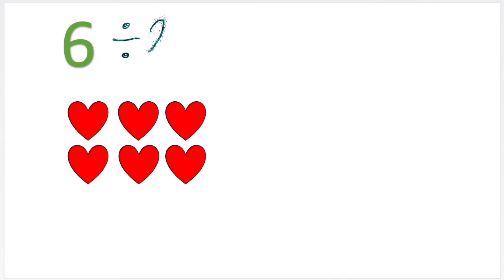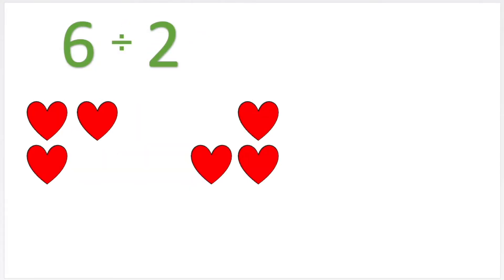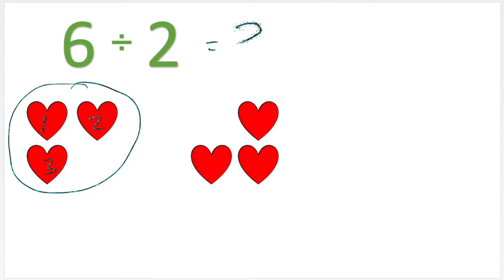Let's have a look at some number sentences. I've got six, and I'm going to show six as six hearts. But now I want to halve my hearts — I want to halve the number six. Remember, halving is the same as saying divide by two. So six divided by two equals — I'm going to split them into two groups, just like that, and count how many is in one group. I can see I've got one, two, three. So six divided by two equals three.